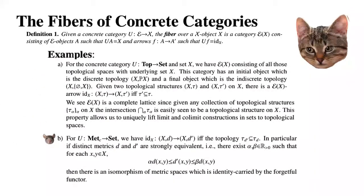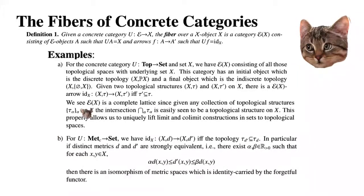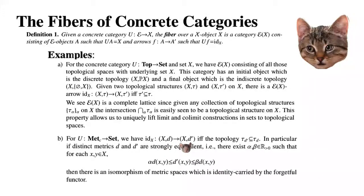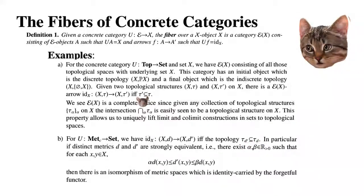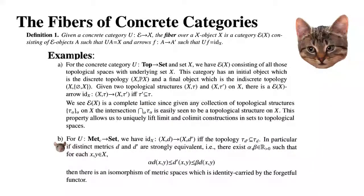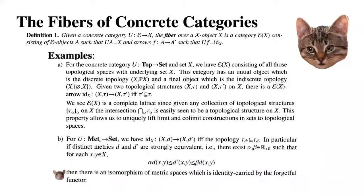For another example, we have the category of metric spaces with continuous maps, which is concrete over Set. The identity on X from (X, d) to (X, d') is a continuous map if and only if the topologies induced by these metrics are in the same containment relation as in the previous example. In particular, if two distinct metrics d and d' are strongly equivalent, then there is an isomorphism of metric spaces which is identity-carried by the forgetful functor.